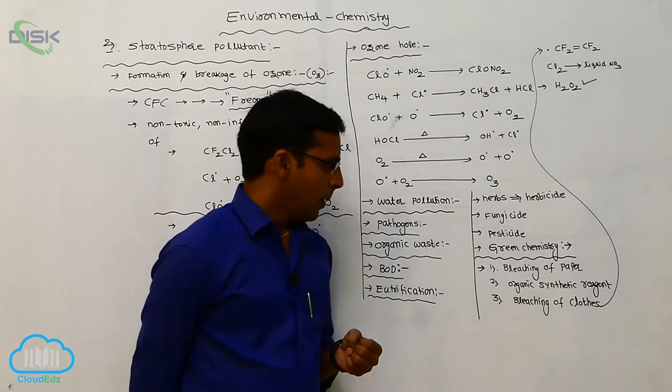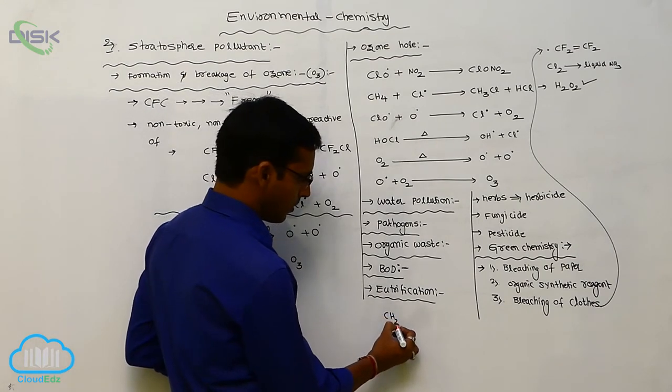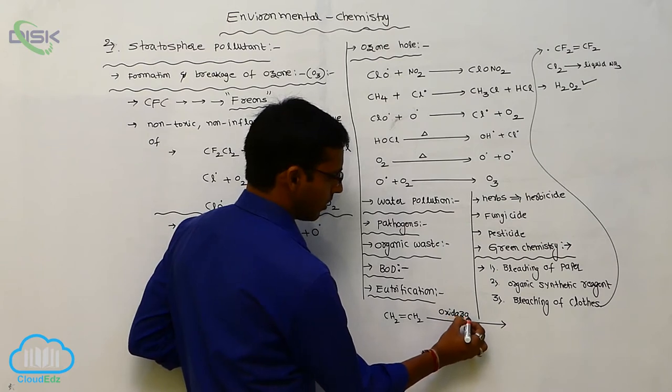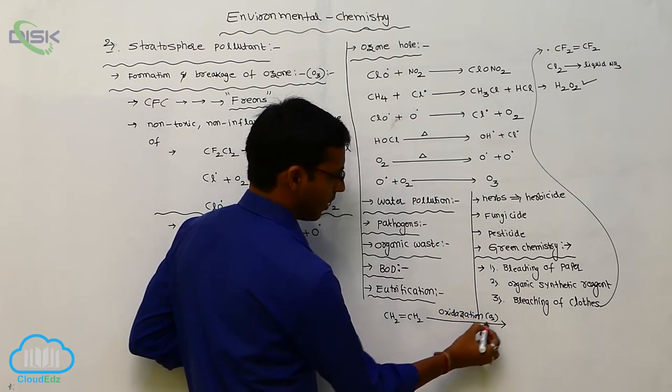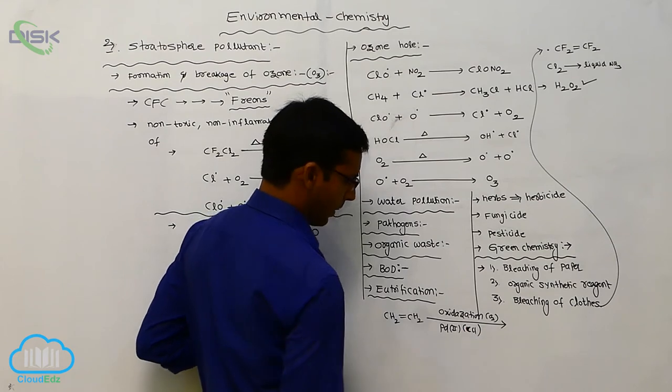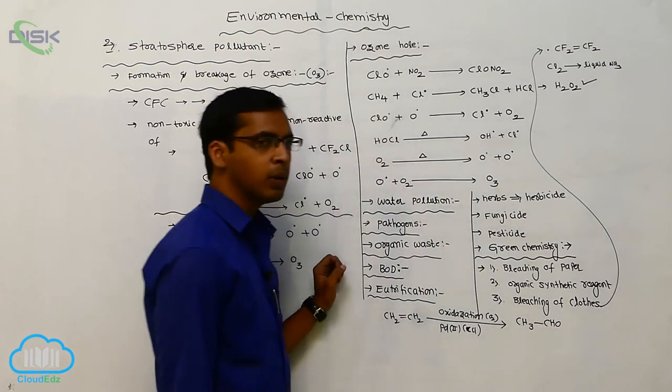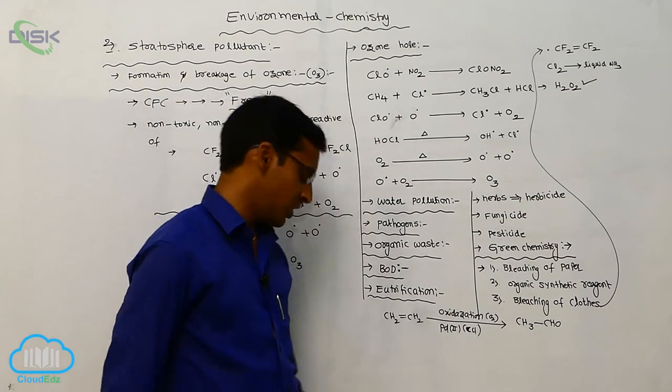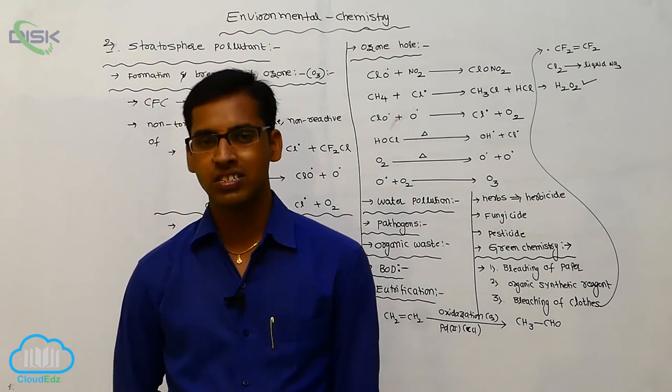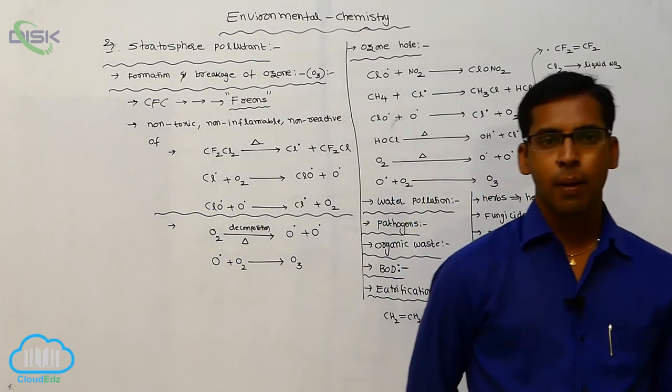And next one is organic synthetic reagent. It means ethylene molecule undergoes oxidation in presence of palladium 2+ or copper 2+ complexes. In presence of these catalysts, it is directly converted to aldehyde. This means ethylene molecule undergoes oxidation in presence of palladium 2+ complex. That catalyst oxidation state is plus 2. It gives acetaldehyde. This is your direct preparation method by using green chemistry.